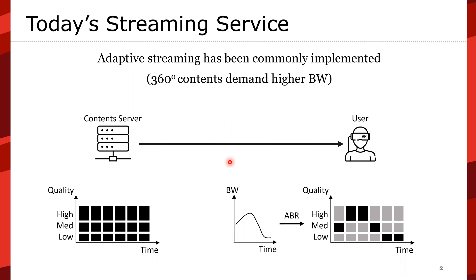Today's streaming service uses adaptive streaming, and adaptive streaming has been widely and commonly implemented. 360 video contents demand much higher bandwidth. Basically, the content server pre-computes different quality versions of the contents ahead of time, and the user fetches content based on network quality. When network quality is okay, it fetches mid-quality; when it gets better, it fetches higher quality; when it goes down, it fetches lower quality.